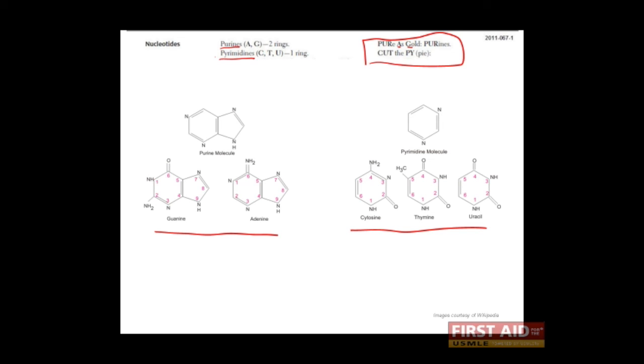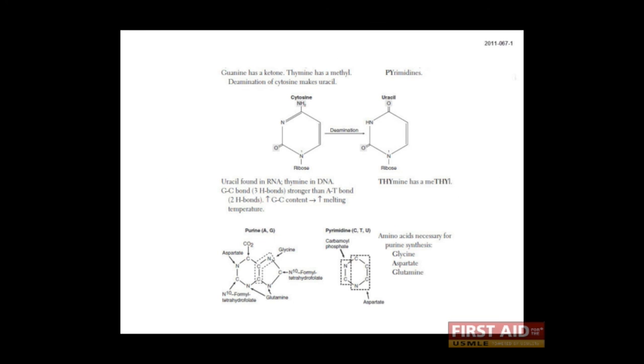Let's talk about some other important features of purines and pyrimidines. One thing to keep in mind is that cytosine can undergo a process called deamination. When this happens, cytosine is converted to uracil, and this is a potential source of mutations in the DNA. This can be repaired, but if it's not, it will result in mutations.